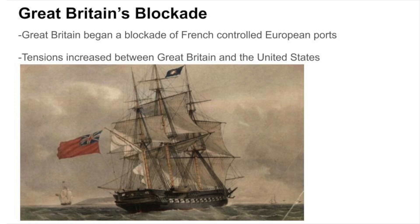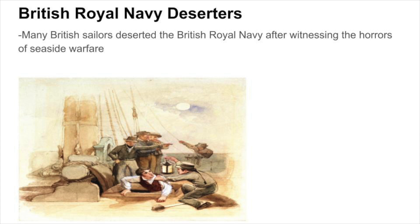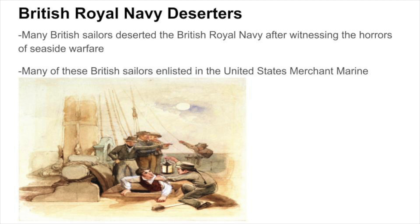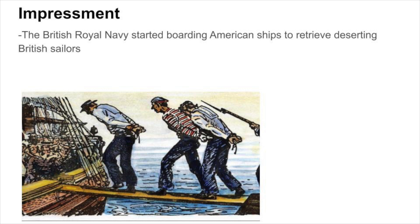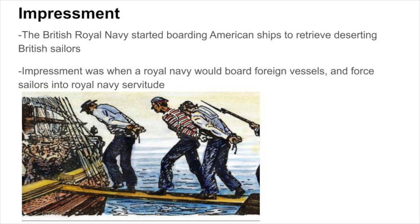As this was all happening, many British sailors deserted the British Royal Navy after witnessing the horrors of seaside warfare. Many of these British sailors enlisted in the United States Merchant Marine, a group of U.S. civilian and federally owned merchant vessels. In order to retrieve the deserting British sailors, the British Royal Navy began to board American ships, practicing the act of impressment. Impressment was when a Royal Navy would board foreign vessels and force sailors into Royal Navy servitude.